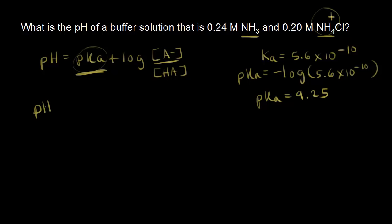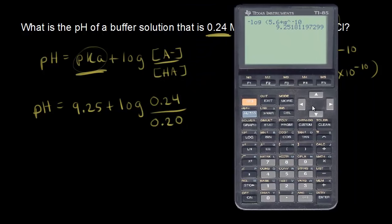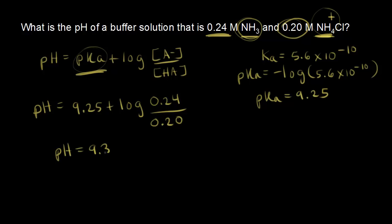Plugging into the Henderson-Hasselbalch equation: pH equals 9.25 plus the log of the concentration of the base, ammonia NH3, which is 0.24 molar, over the concentration of the acid, NH4 plus, which is 0.20 molar. The log of 0.24 divided by 0.20 is 0.080, so 9.25 plus 0.08 gives us a buffer solution pH of 9.33.